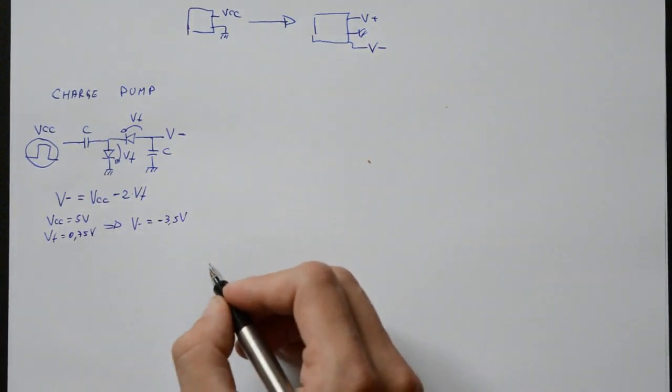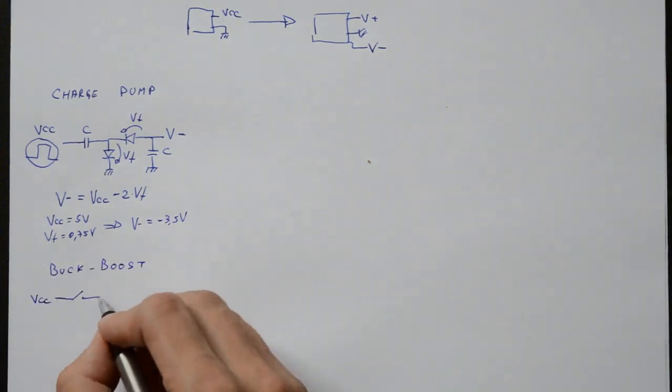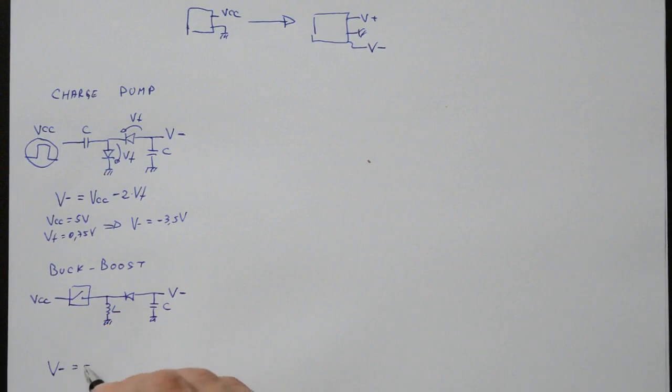If you want more control, and also higher negative voltages, a buck boost supply can be built. A bit more complicated, but this time you get any voltage you want.